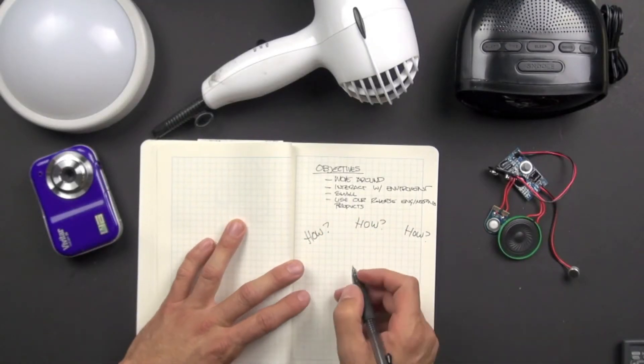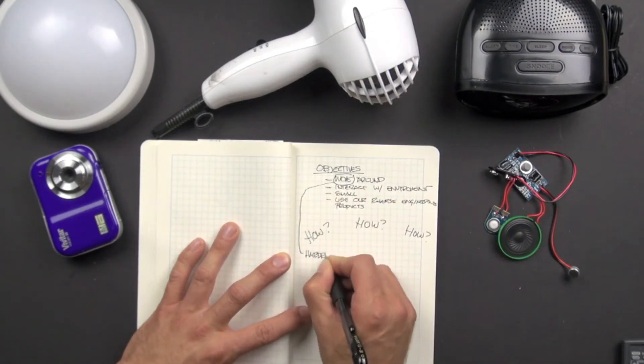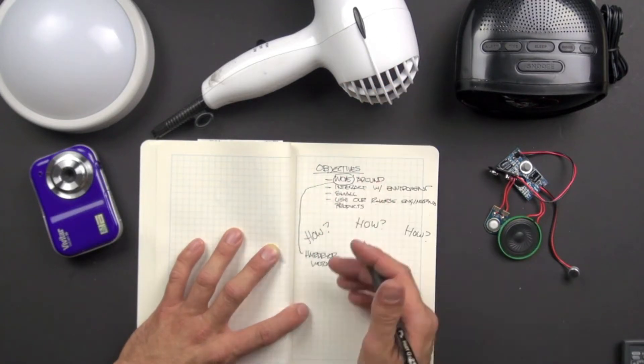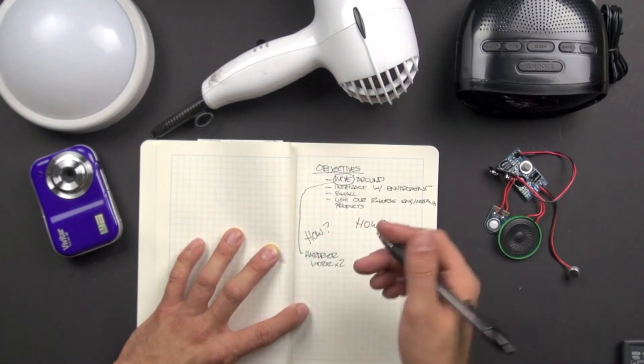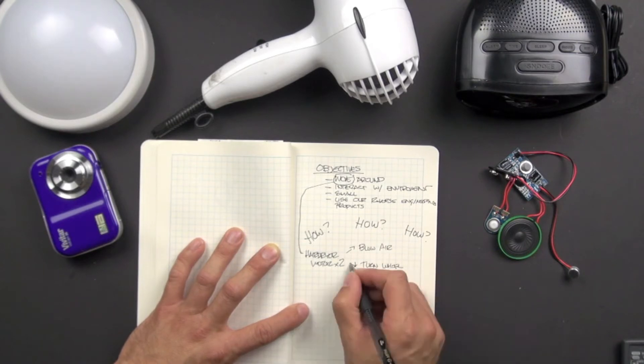Now that we have our objectives, how do we make it work? So what we're going to do is let's just isolate each one. To move around, we can use the hair dryer motor. And we know that moves. And we could use two of them and maybe use them to blow air to move our device. Or we could turn a wheel with them.